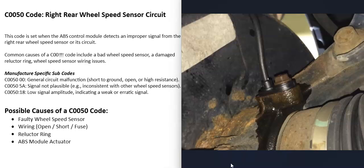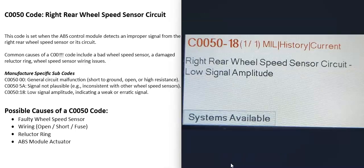It's going to need to be troubleshot to find out why. One thing to note about this code is that there can be subcodes, which can in some cases help you find out what the problem is. For example, this '18' here is going to be a low signal amplitude, which means the signal is really weak or erratic. These subcodes can be manufacturer-specific, but if you do get one, they can sometimes help you find the problem.